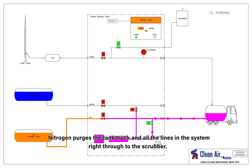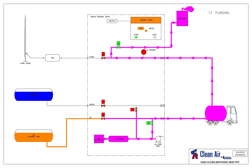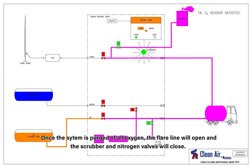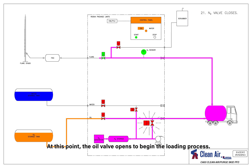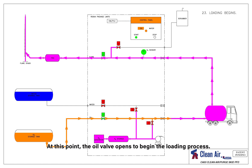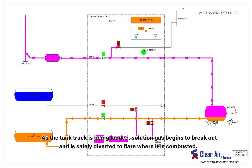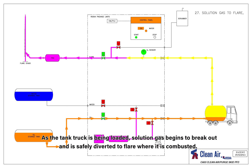Nitrogen purges the tank truck and all the lines in the system right through to the scrubber. Once the system is purged of all oxygen, the flare line will open and the scrubber and nitrogen valves will close. At this point, the oil valve opens to begin the loading process. As the tank truck is being loaded, solution gas begins to break out and is safely diverted to flare where it is combusted.